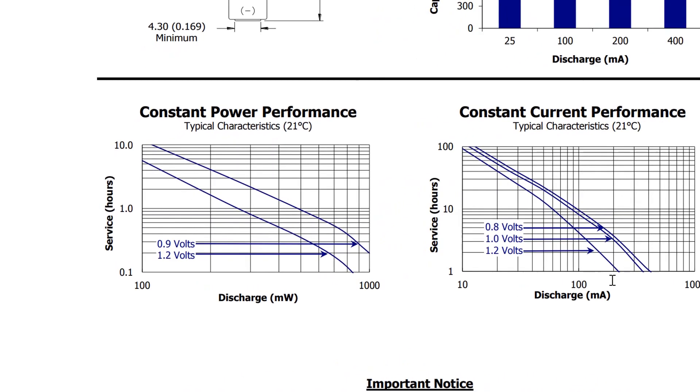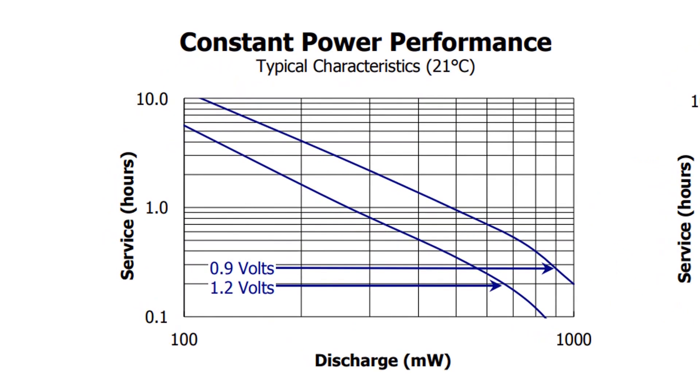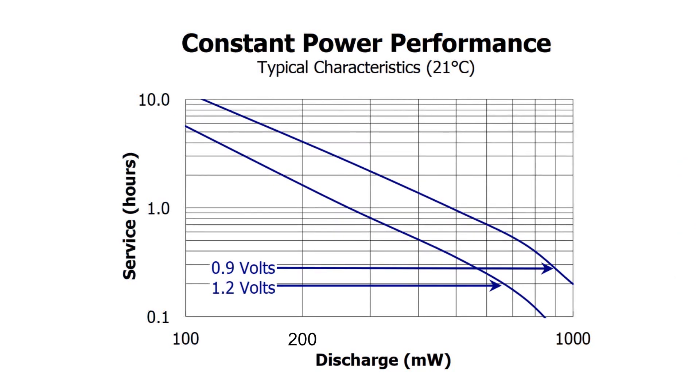This is the number we'll need to look at the datasheet. We'll want to look at the constant power performance chart for our switching power supply example. If you remember from the constant current plot, a 1.0 volt cutoff point was very close to a 0.8 volt cutoff. So, we'll use the 0.9 volt cutoff here as a close approximation. We can also guess where 118 milliwatts is and draw a line up from that. We look at where it intersects with the 0.9 volt curve and determine that we can expect between 8 and 9 hours of service from our AAA batteries.